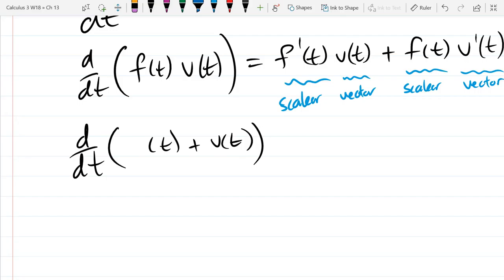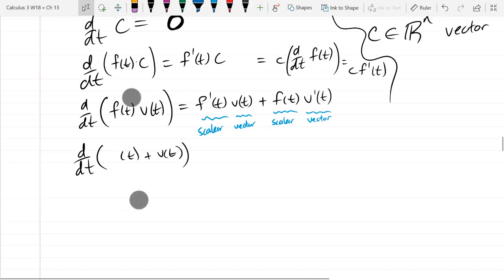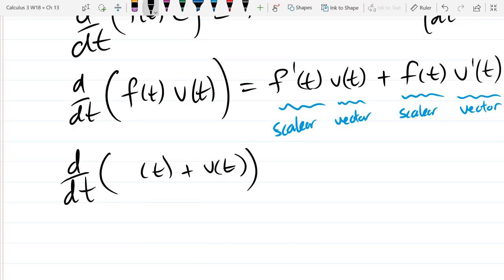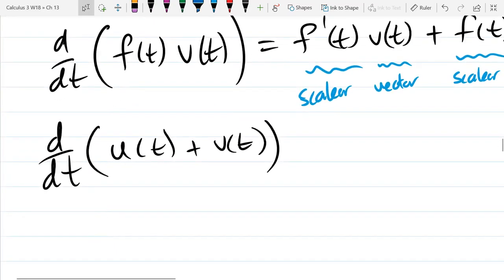We can add two vector functions. I think I use v for our second. Yep, so v is our second curve and u is our, so we have a u and a v.